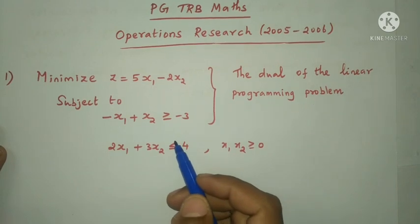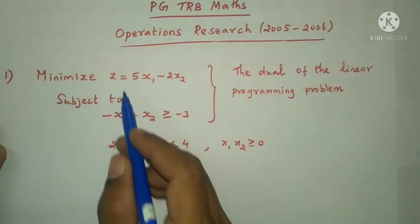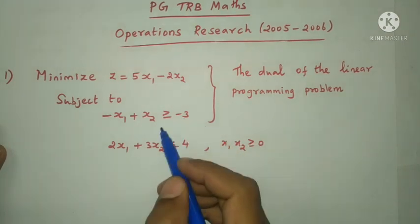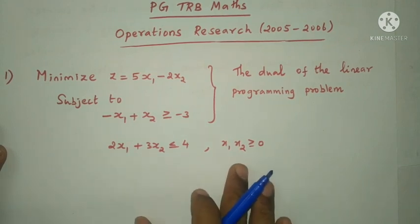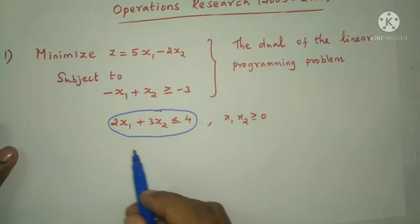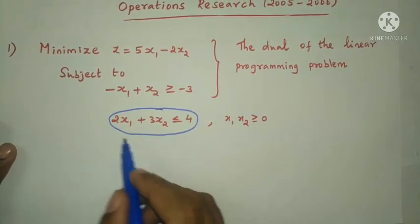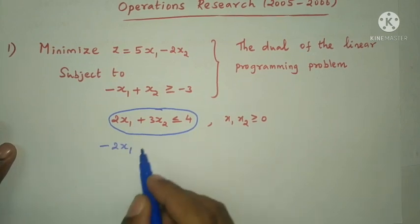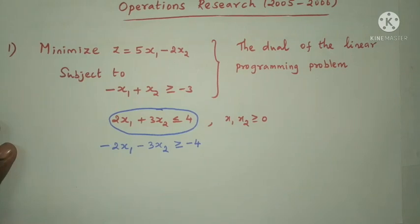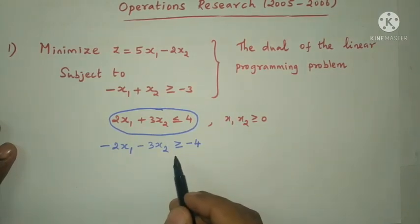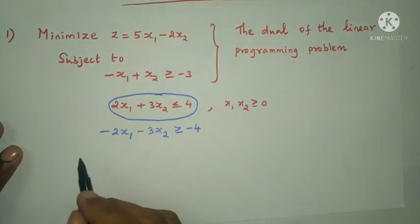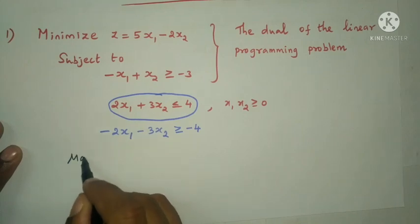This is the objective function. For the minimize problem, constraints are greater than or equal to. The first constraint is of the greater than or equal to type, and the second constraint is of the less than or equal to inequality type. For the dual formulation, we set up the dual objective function.